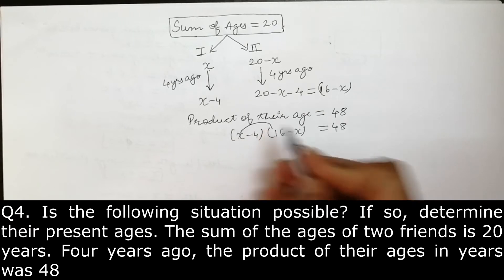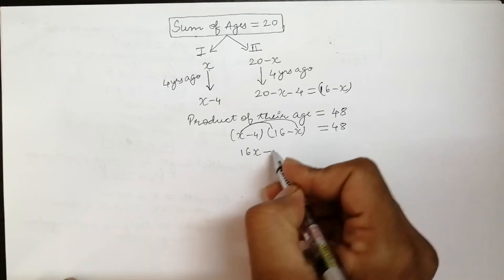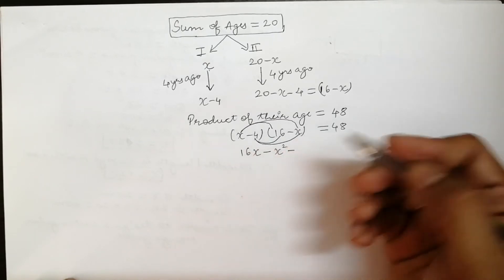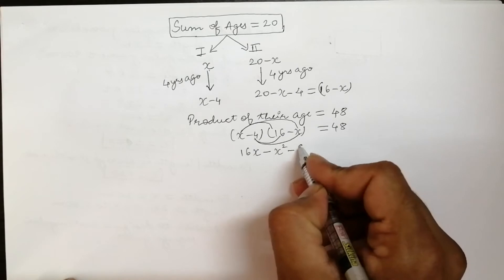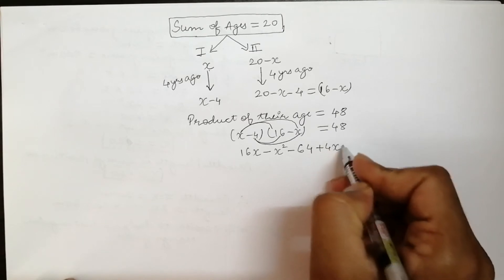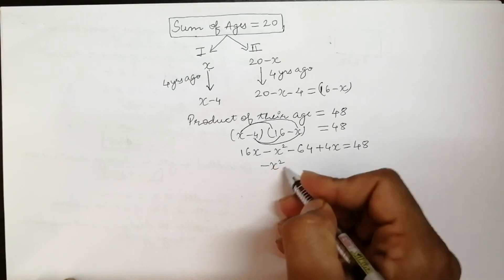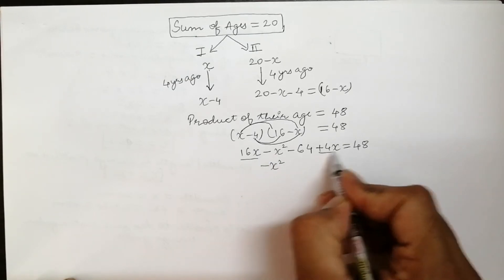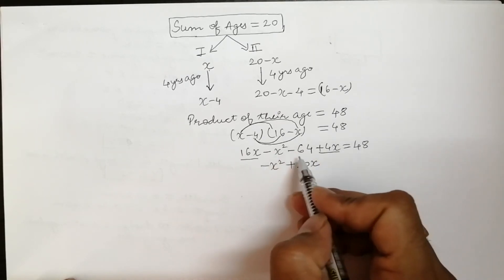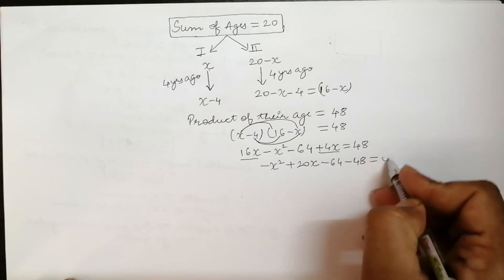अभी हम इसको solve करेंगे। Solve करने के लिए first term into first term, फिर first term into second term — तो ये हो जाएगा 16x minus x square, minus second term into first term, फिर second term into second term — minus 4 into 16 is minus 64, और minus 4 into minus x is plus 4x, which is equal to 48.